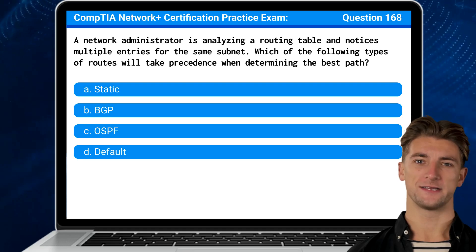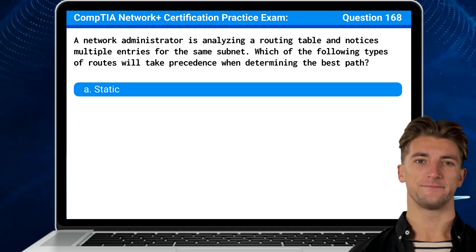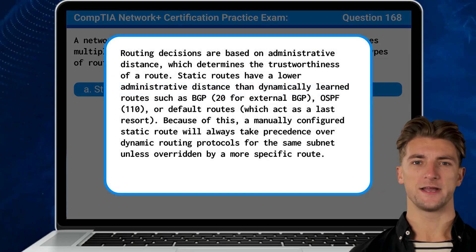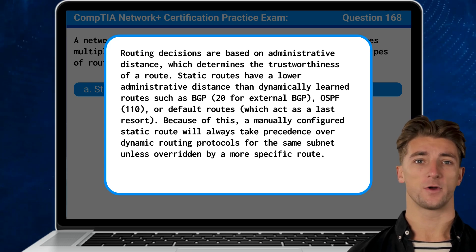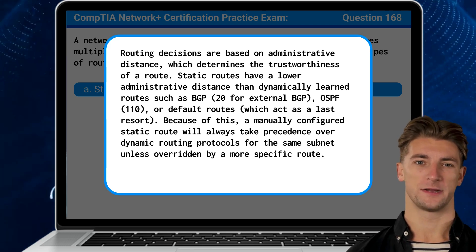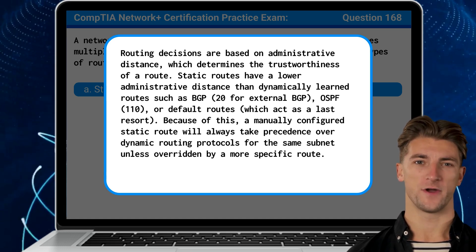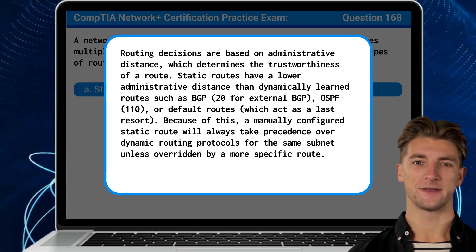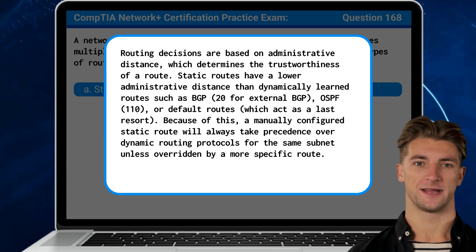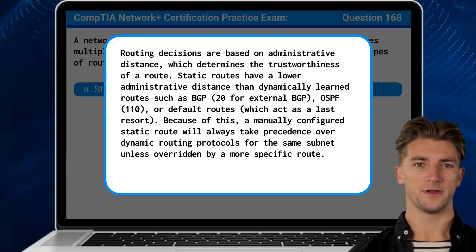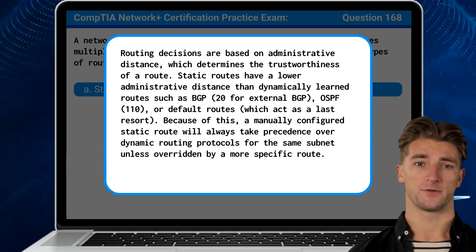The answer is A: Static. Routing decisions are based on administrative distance, which determines the trustworthiness of a route. Static routes have a lower administrative distance than dynamically learned routes such as BGP, OSPF, or default routes. Because of this, a manually configured static route will always take precedence over dynamic routing protocols for the same subnet, unless overridden by a more specific route.